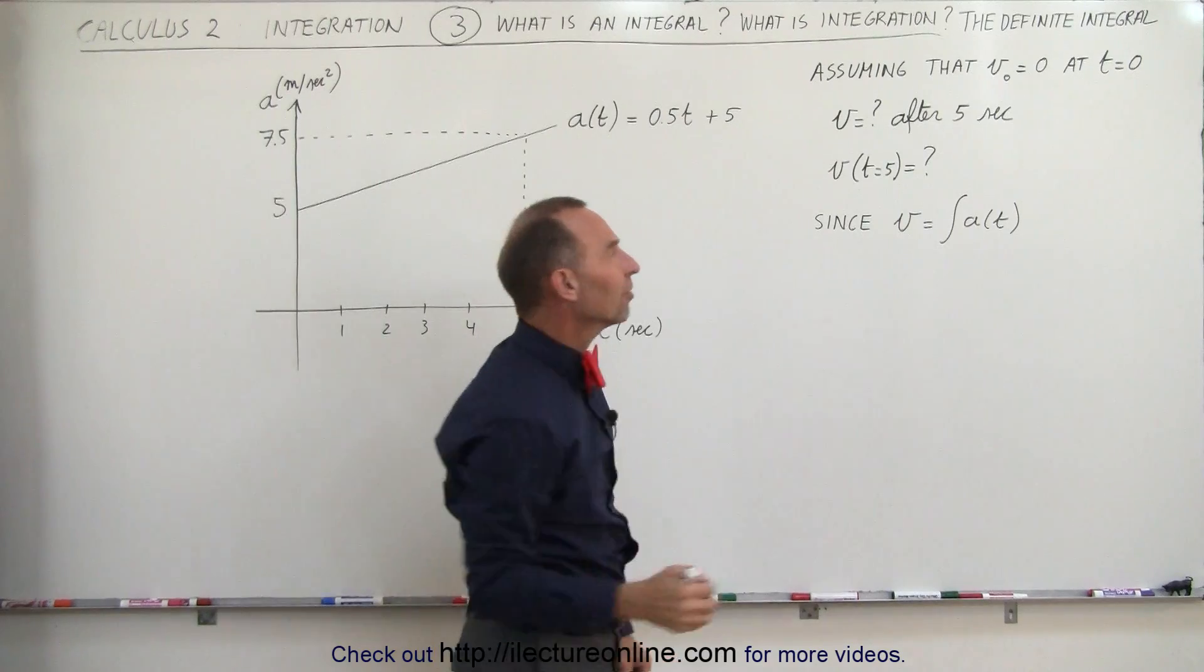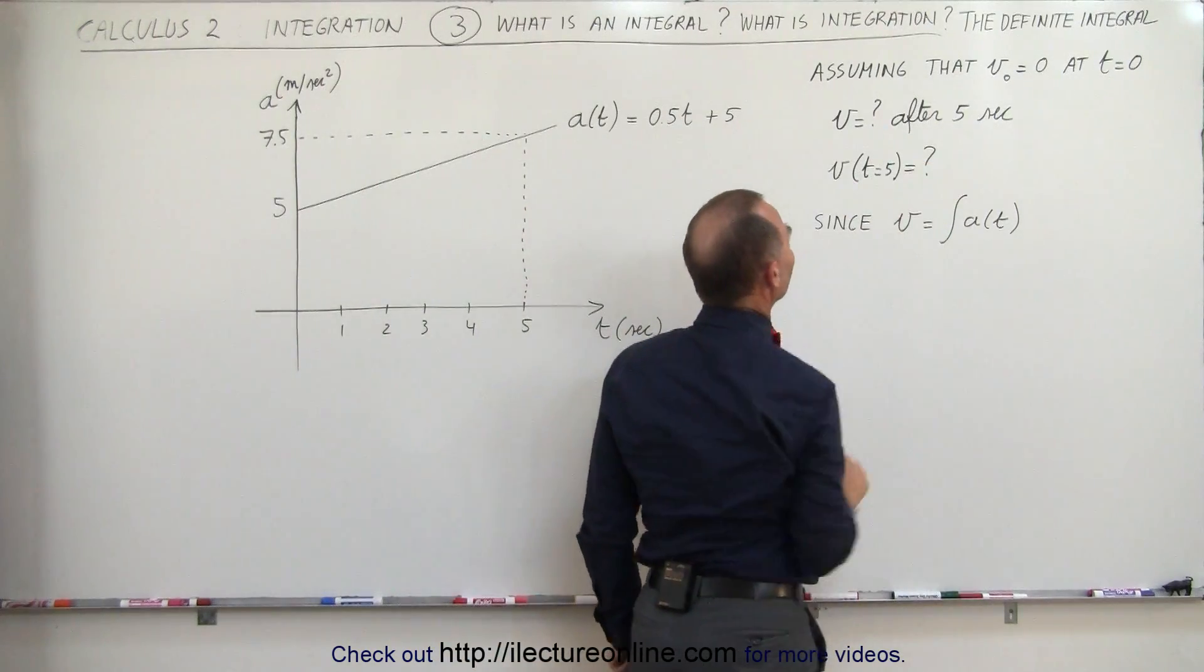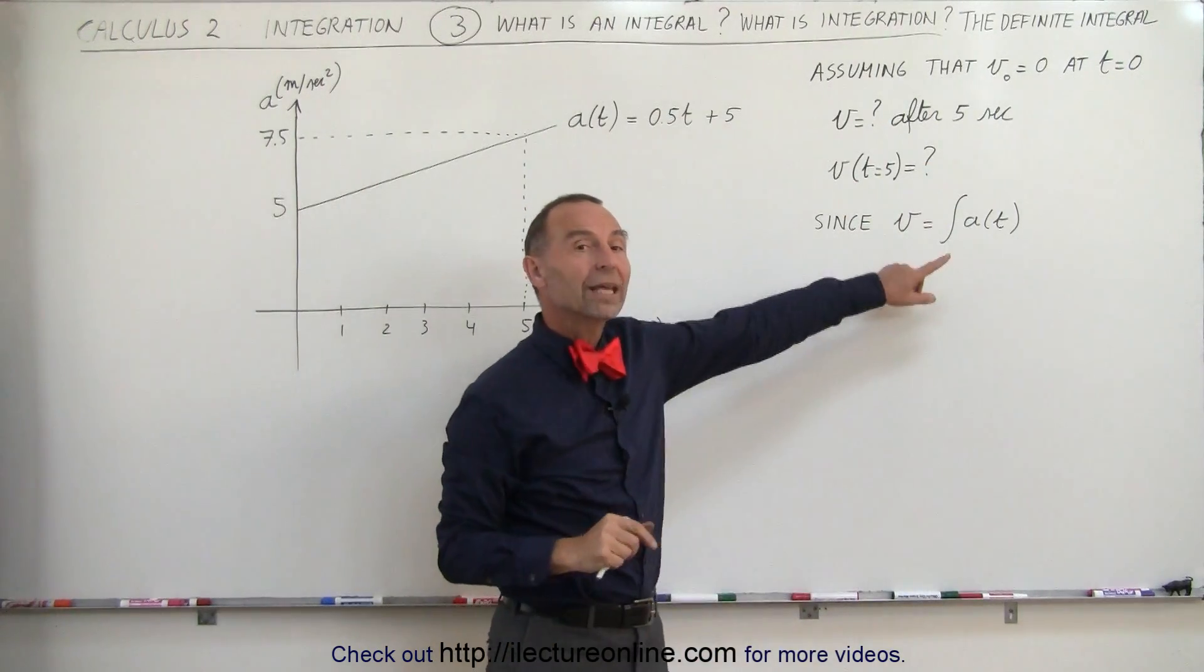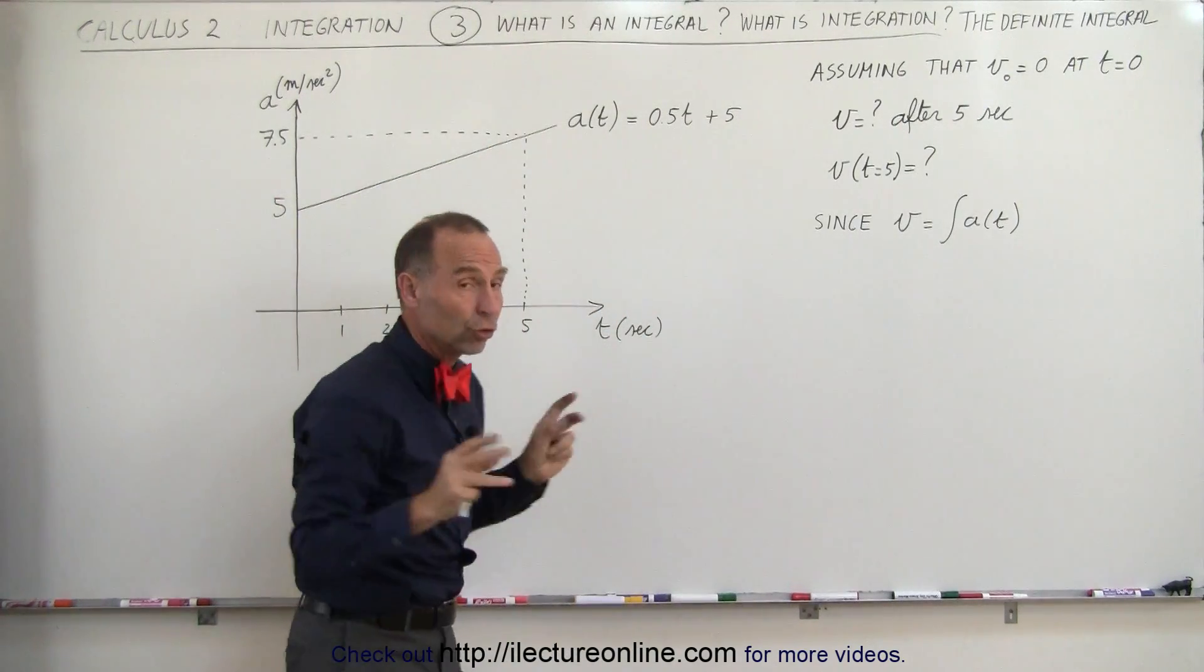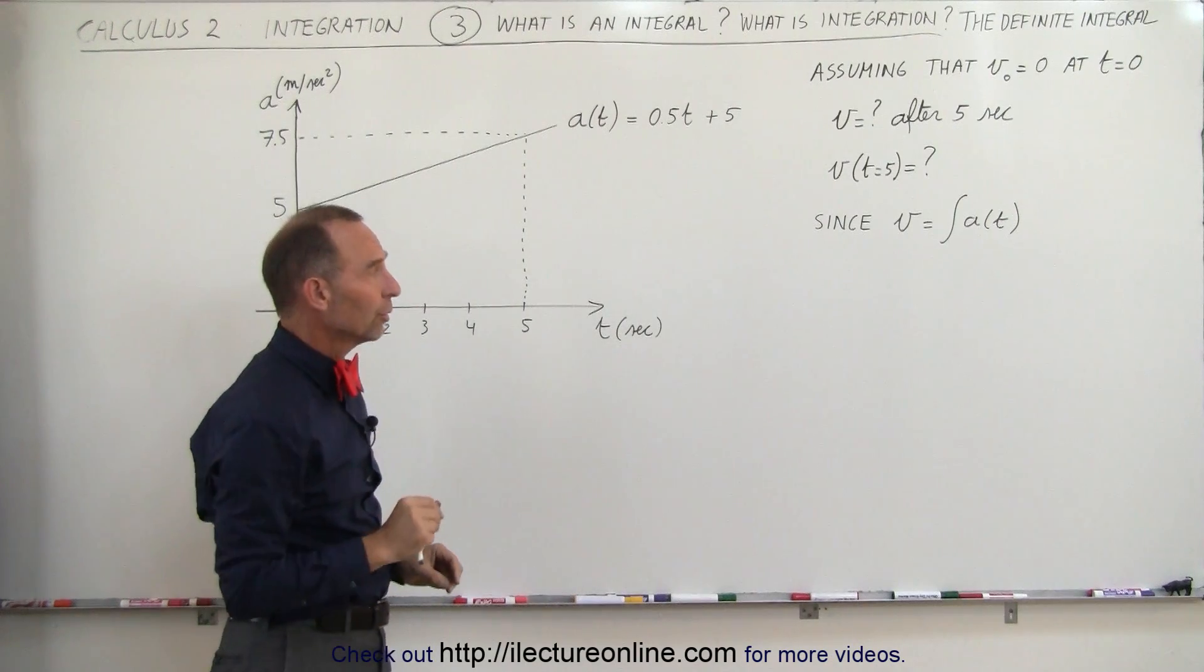So the question is, what will be the velocity of the car after 5 seconds? So for that, we're going to take the integral, and then later on we're going to check our answer by calculating the area underneath this curve to show that they should indeed be equal to each other.